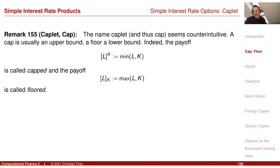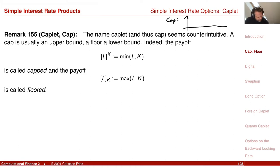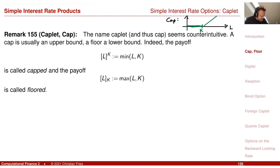Maybe the two names are a bit counterintuitive. You think that Cap is something that is cutting off something at the top. But if you look at our Cap payoff as a function of the interest rate observed, it pays nothing if you are below K, and otherwise it pays a linear function. So it's actually cutting something off at the bottom, not at the top.